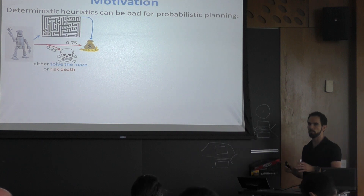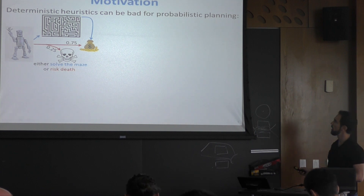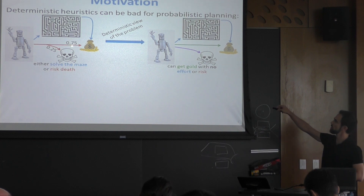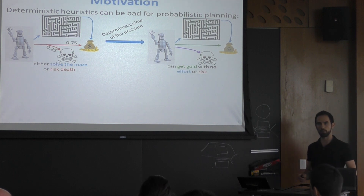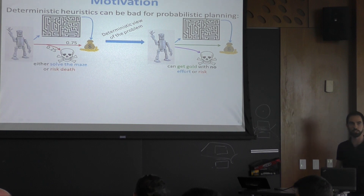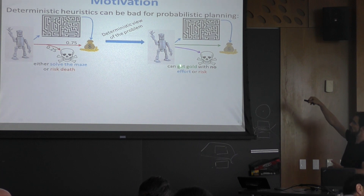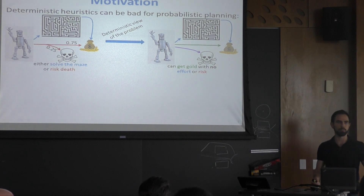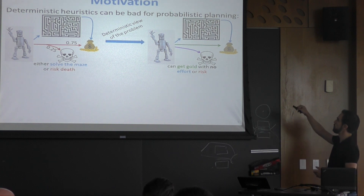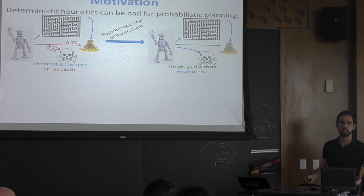One way of solving this problem is to perform heuristic search. If you're going to do heuristic search, you need a heuristic. To compute a heuristic, we relax this problem by getting rid of the probabilities. When you look at this deterministic problem, you split this action in two — now the robot can go straight to the gold, or can decide to die, literally. This is a deterministic problem, so you can use any technique from deterministic planning. The bad thing is, once you bring this guidance back, it will tell you just go straight for the gold, and it's oblivious to the fact that you might die when you try to do that.